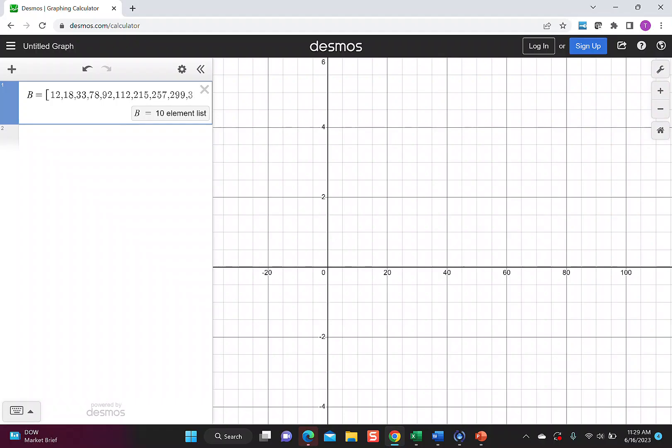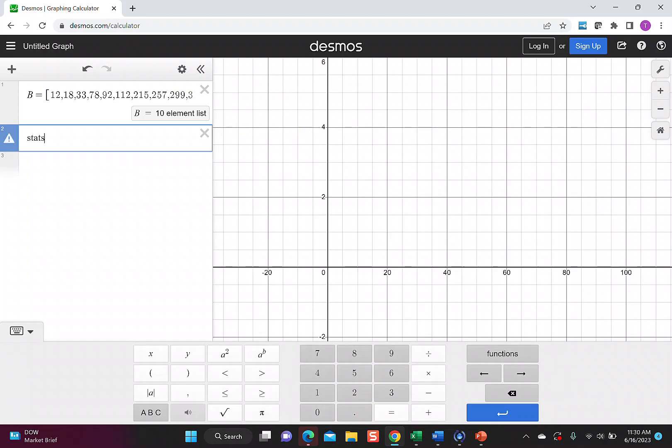Back in Desmos, I typed in the values. This time I called the list B. Now I type stats, put a parenthesis, capital B. So I have a minimum of 12, quartile 1 is 33, median is 102, quartile 3 is 257, and we have a maximum of 315.